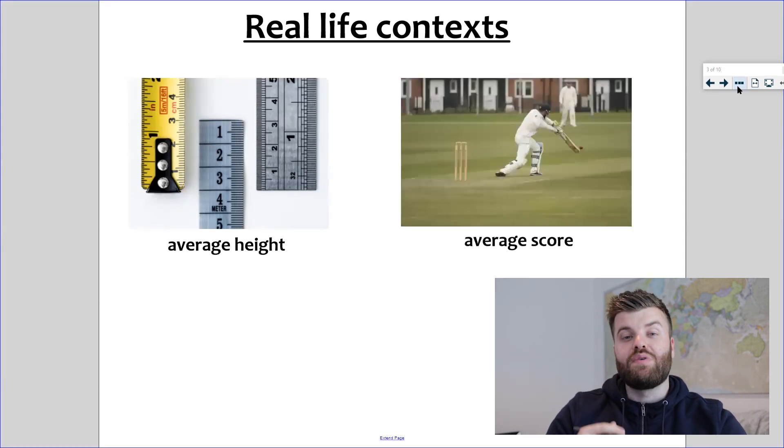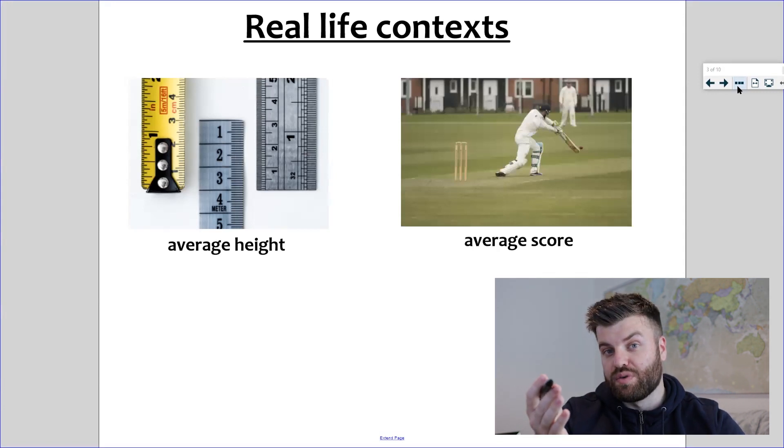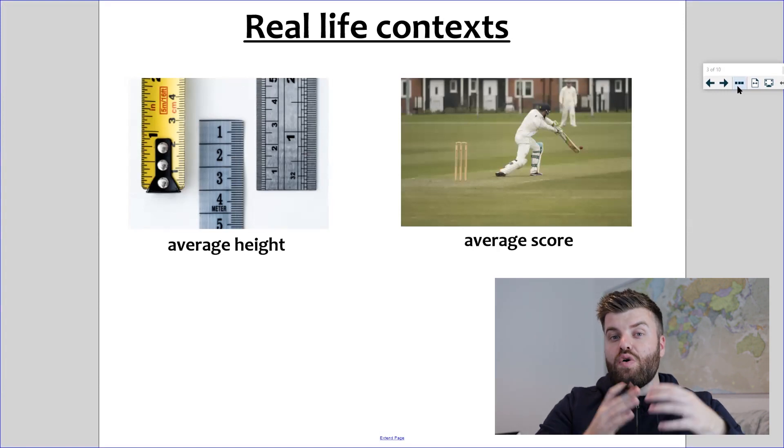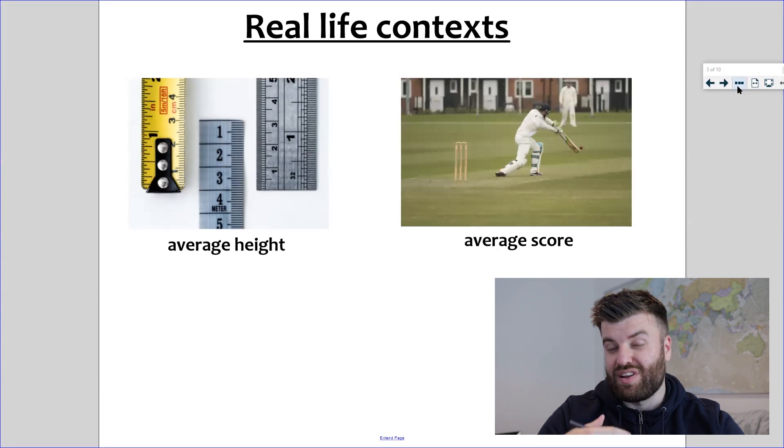You may have also heard it as an average score. You may have the game of cricket where the batsman scores runs, and over the season they get scores like 50, 87, maybe even a zero. Over the season, those scores are put together to give an average, and that is the likely score that batsman would get per game.